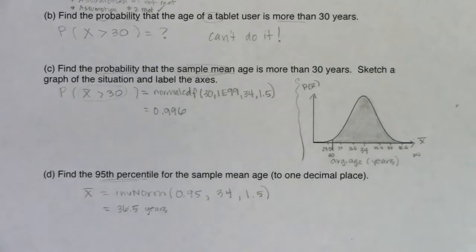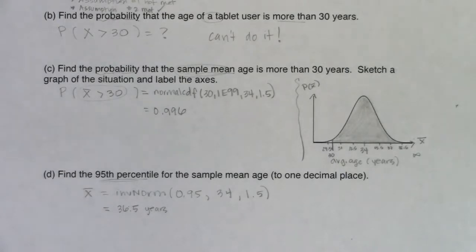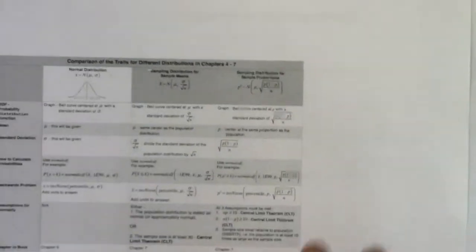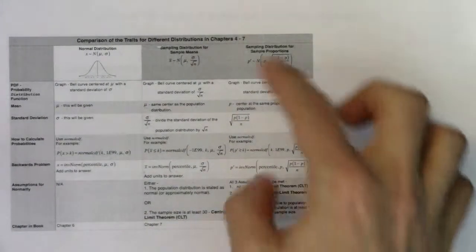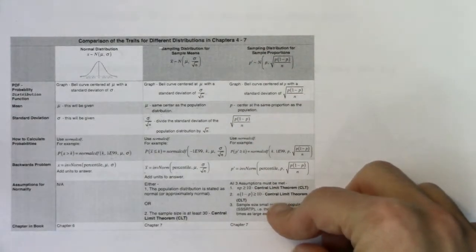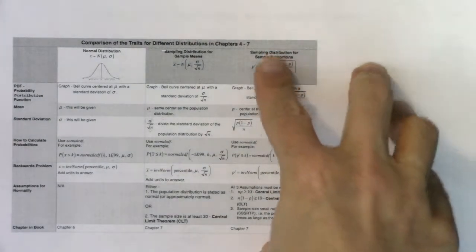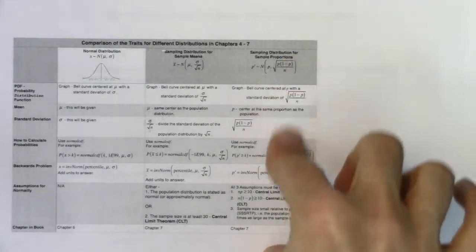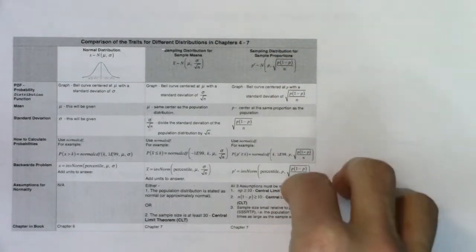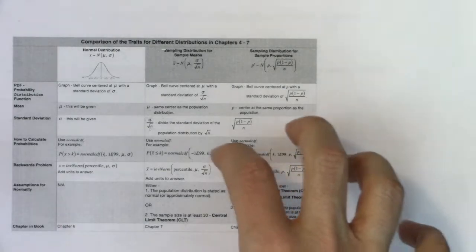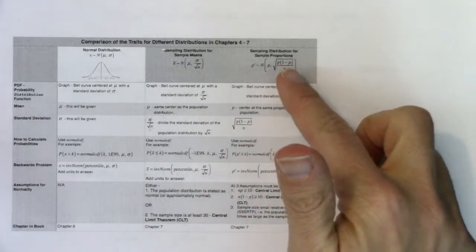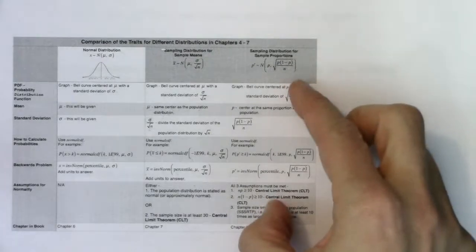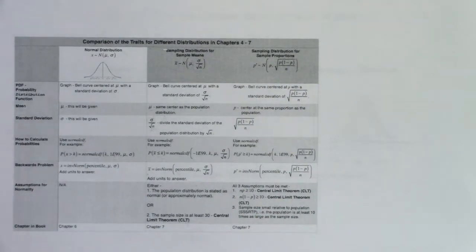That concludes our look at the sampling distribution for sample means. We're going to change course and move to the sampling distribution for proportions. The book doesn't do a great job covering this, so we'll look at it carefully — categorical variables come back into play, and we'll look at frequency counts turned into relative frequency counts or sample proportions.